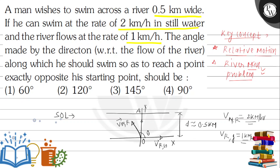So first, the velocity of man with respect to ground — that is called the resultant velocity — must be along the y-axis. So vmg, the velocity of man with respect to ground, must be along the y-axis. Then it will go directly to the opposite point A. The x-component of this resultant velocity must be zero.